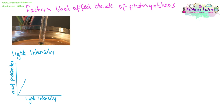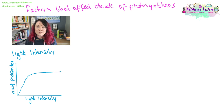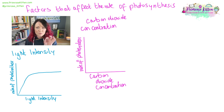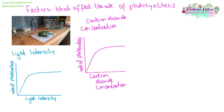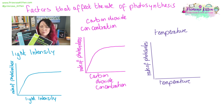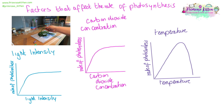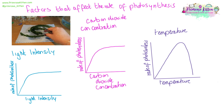Starting with light intensity: as we increase the light intensity, the rate of photosynthesis will increase, but only up to a point — after that, something else will become the limiting factor. That could be carbon dioxide concentration: as we increase the concentration of carbon dioxide available, we get an increase in the rate of photosynthesis, but again only up to a point. Temperature will also affect the rate of photosynthesis — the rate will increase as temperature increases, but only up to a certain point. After that, the temperature will be too high and the proteins involved in photosynthesis will start to denature.